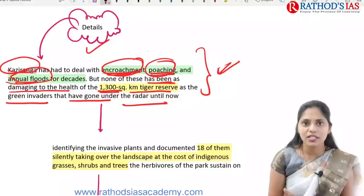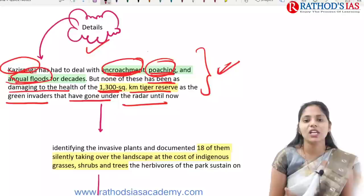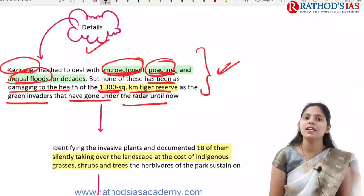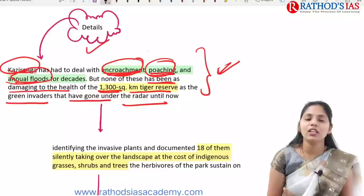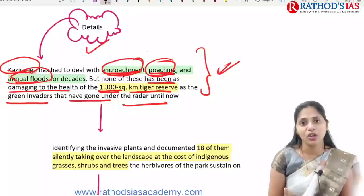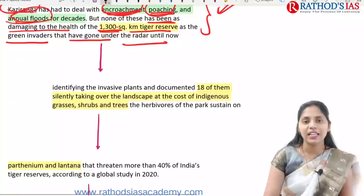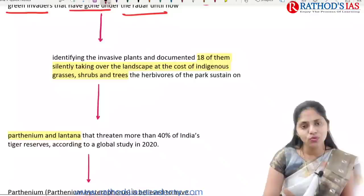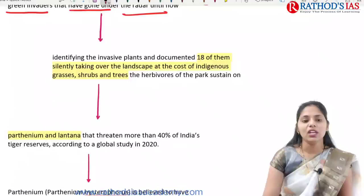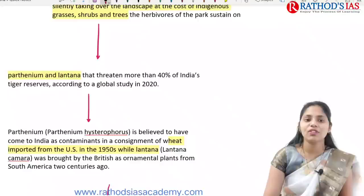The invasive weeds cause rapid population increase with no competition, and animals in the area generally do not feed on them. Because of this, their population becomes very high and poses a threat to local native species. Identification of 18 invasive weed species has been documented, and these have some impact on indigenous grasses, shrubs, and trees.